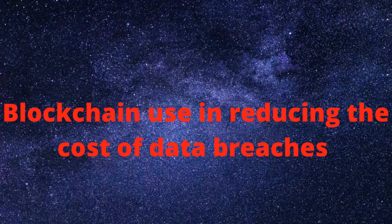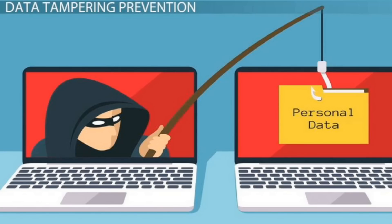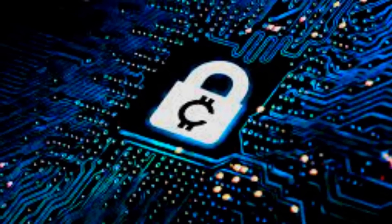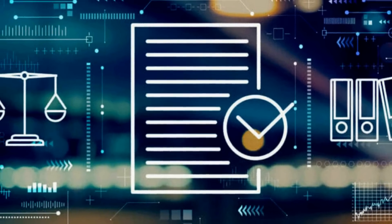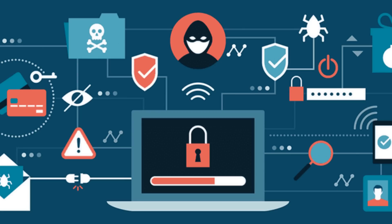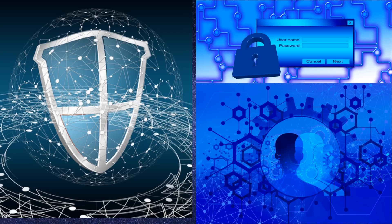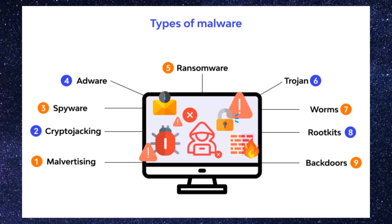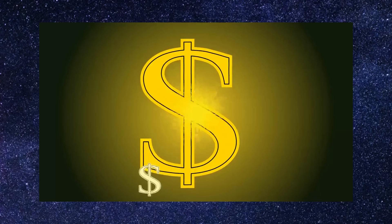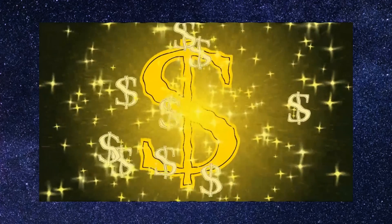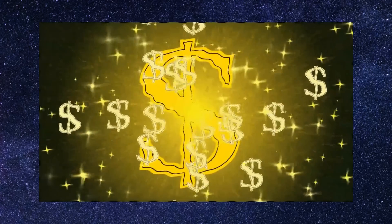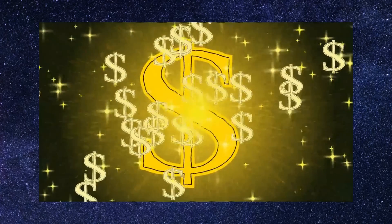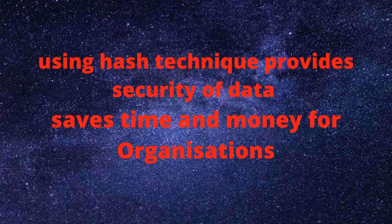Blockchain use in reducing the cost of data breaches: organizations can reduce the costs of data breaches by using blockchain. They can also avoid litigation, losses, compromised customer data, and interruption or downtime costs related to the breaches. Data and information security is costing organizations more than 20% of their IT budgets. Part of these are malware costs, which are in the tune of $2.4 million per year on average. It takes months to fix the affected systems. The annual cost of data breaches now stands at $3.2 million, up by 12% in 5 years according to a recent report by IBM.